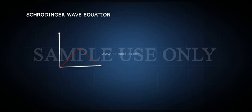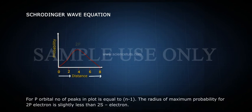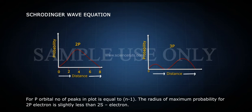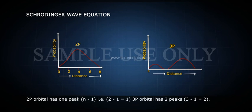The radial probability distribution curves. For P orbital, number of peaks in plot is equal to n minus 1. The radius of maximum probability for 2P electron is slightly less than 2S electron. 2P orbital has one peak, n minus 1, that is 2 minus 1 is equal to 1. 3P orbital has two peaks, 3 minus 1 is equal to 2.